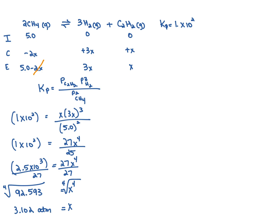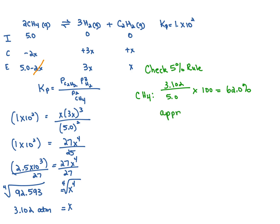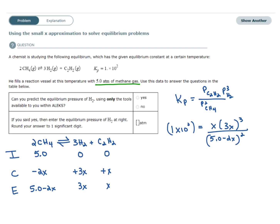I solved for x by assuming it is very small, but before proceeding I need to check the 5% rule. I check whether x = 3.102 is 5% or less of CH4's initial pressure of 5.0 atm. It turns out that x is not less than or equal to 5% — it's actually more. So our approximation here is not valid. Going back to the original question, since we cannot validate the small x approximation, we would have to answer no — we would not be able to predict the equilibrium pressure.